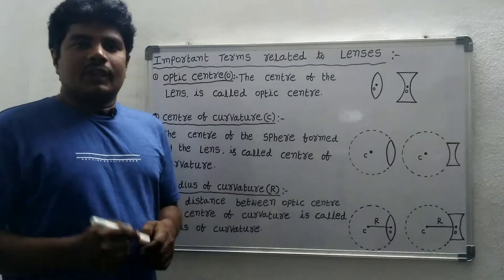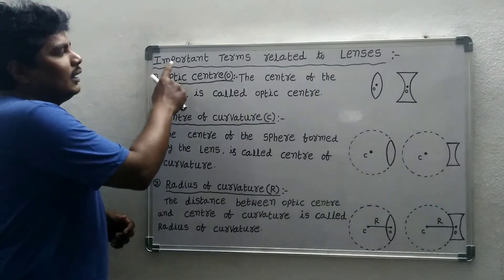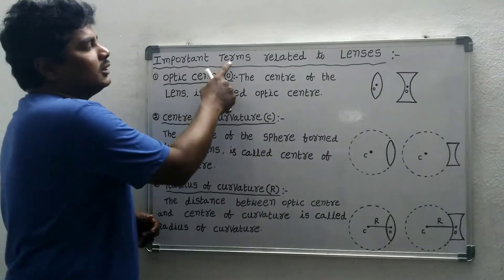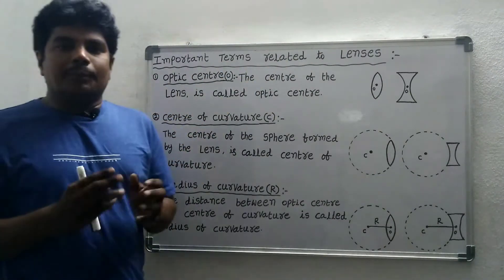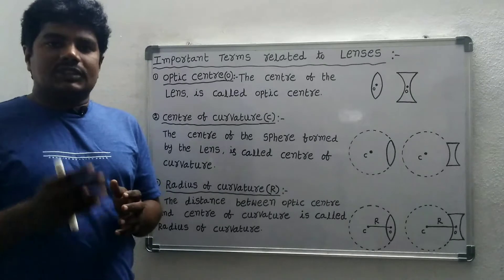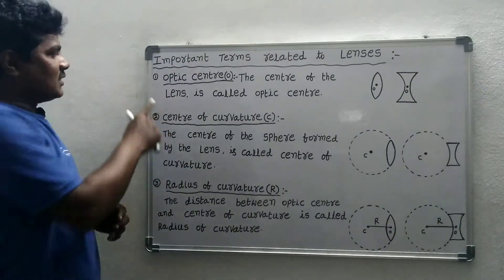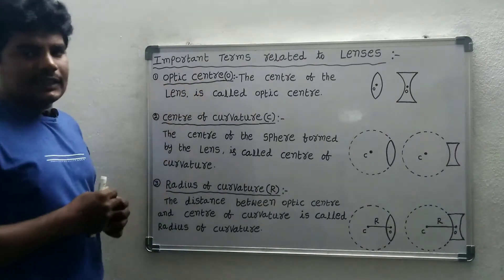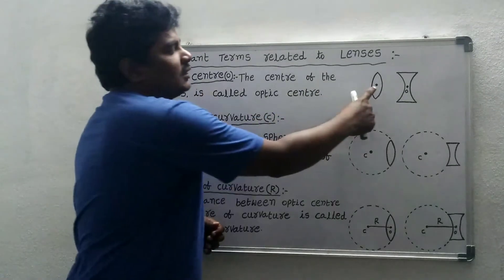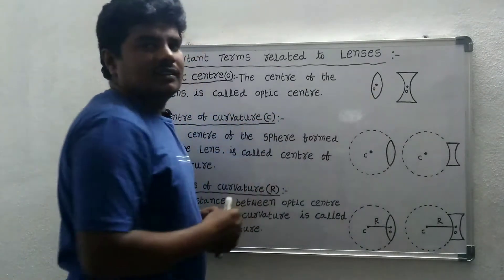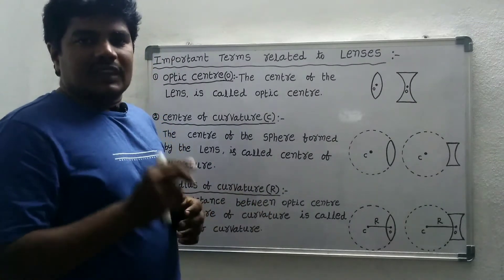Good evening students. Today in this class we discuss important terms related to lenses. The first term is optic center. The center of the lens is called the optic center, and it is represented by O.